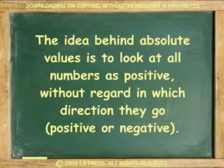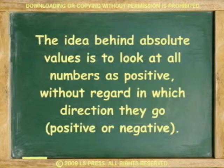A value becomes absolute if we decide to disregard the opposite or negative nature of numbers. That means, of course, that in practice all absolute values become positive. Absolute values are always shown surrounded by two vertical bars. For example, absolute 9 equals 9, and absolute negative 9 equals 9.